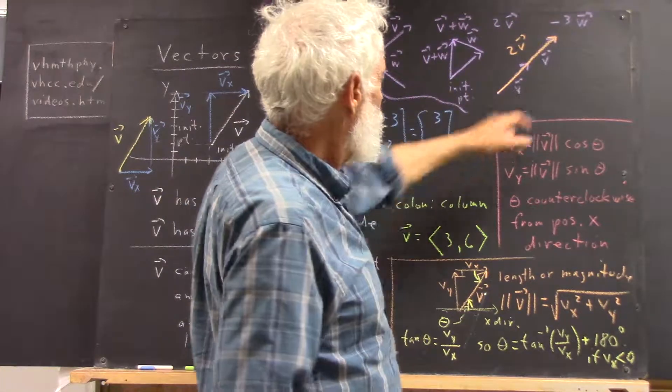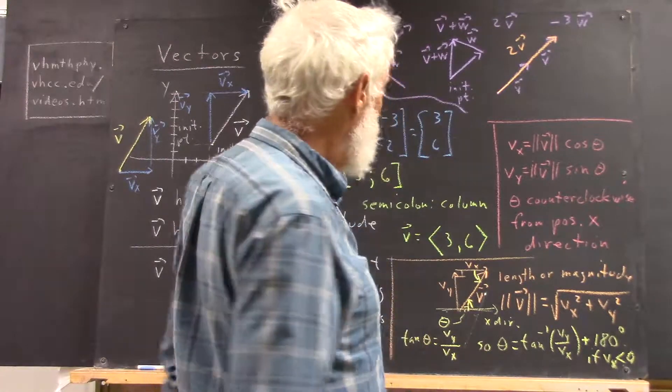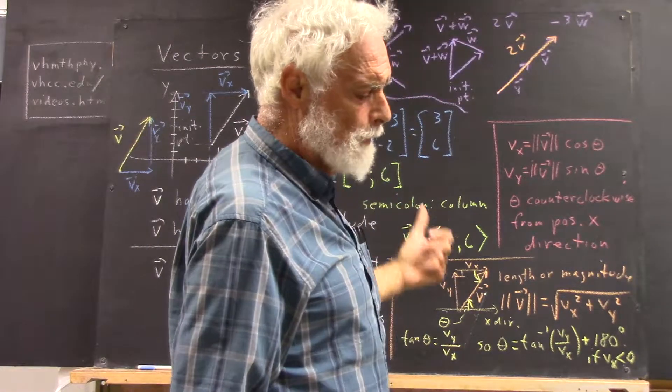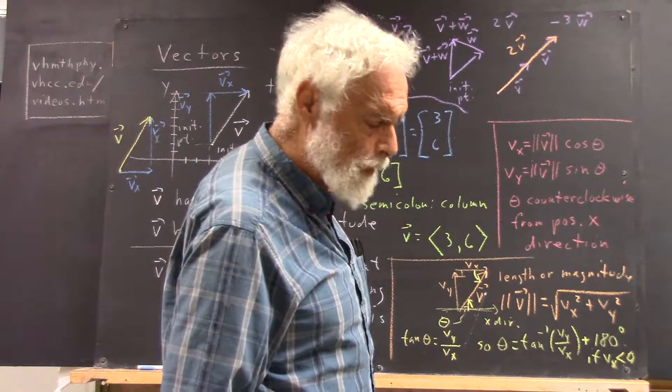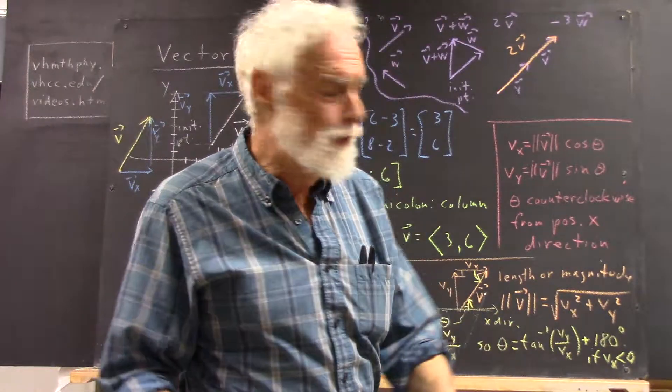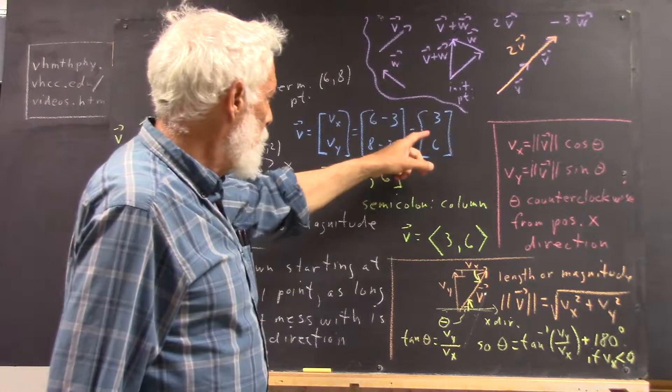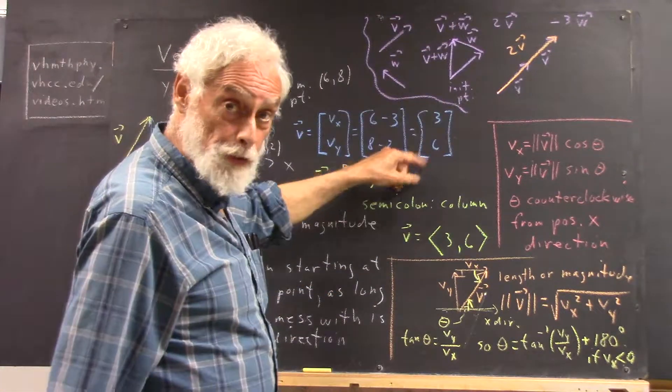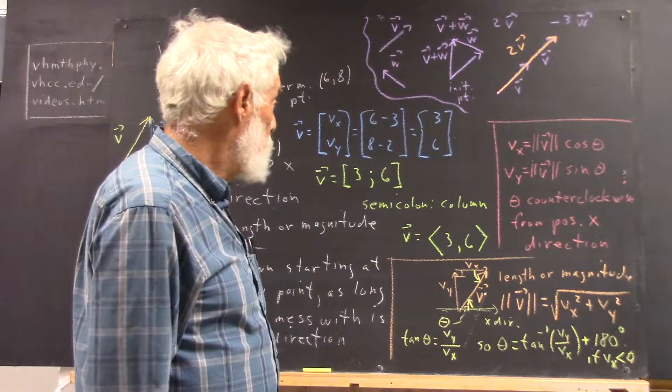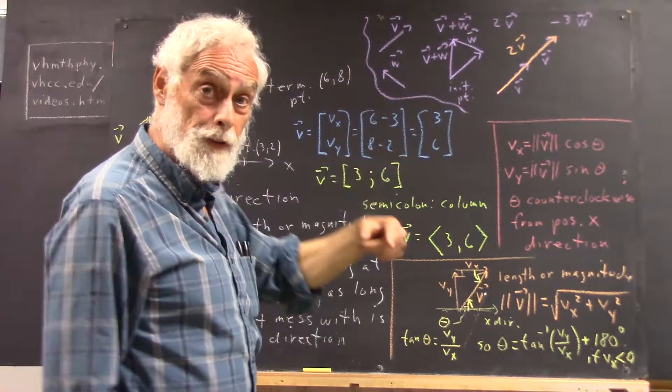Now, what about negative 3w? Well, that's like negative w plus negative w plus negative w. What do I mean by negative w? Think about it. If I wanted to do the negative of the vector (3, 6), it would make sense to say, well, that should be negative 3, negative 6.